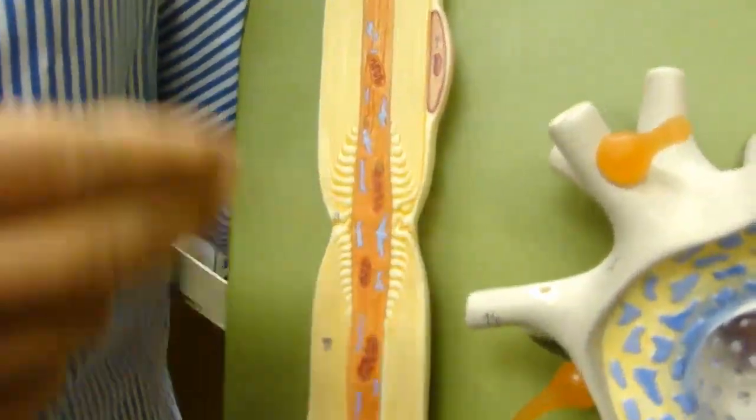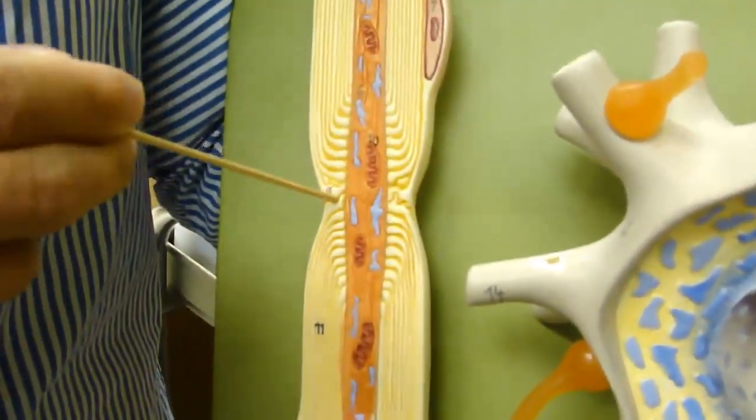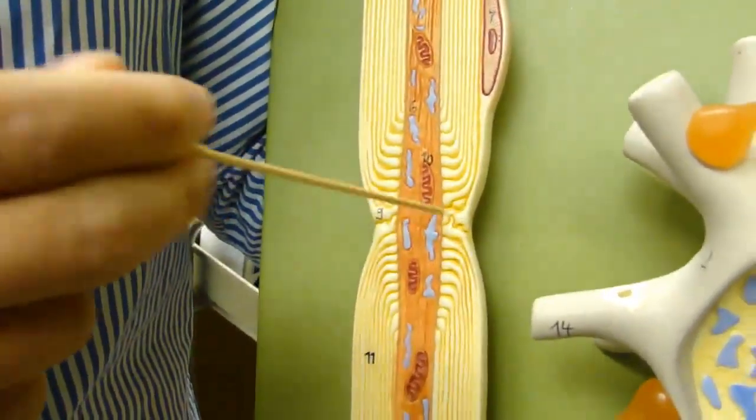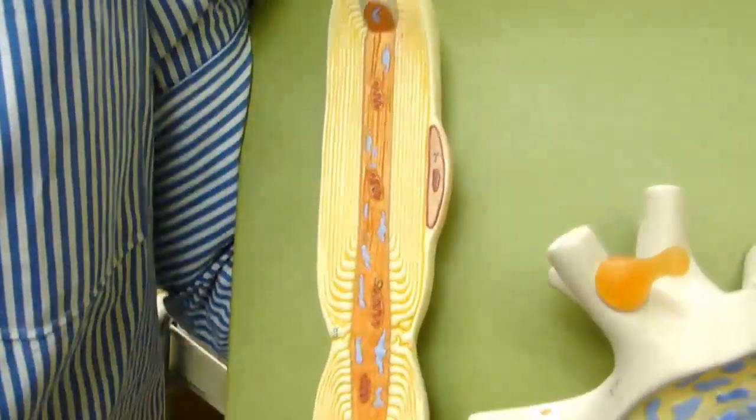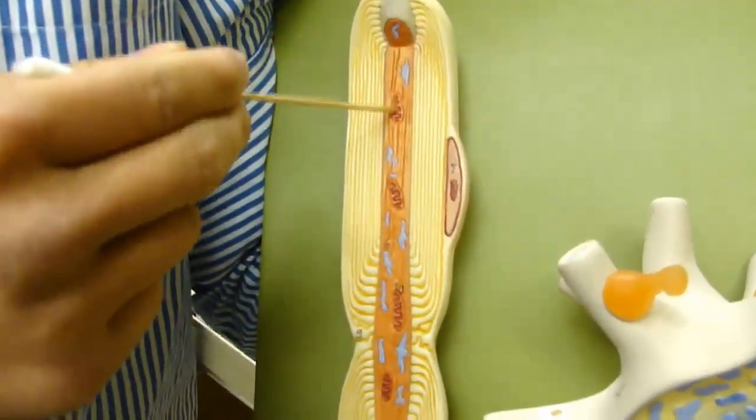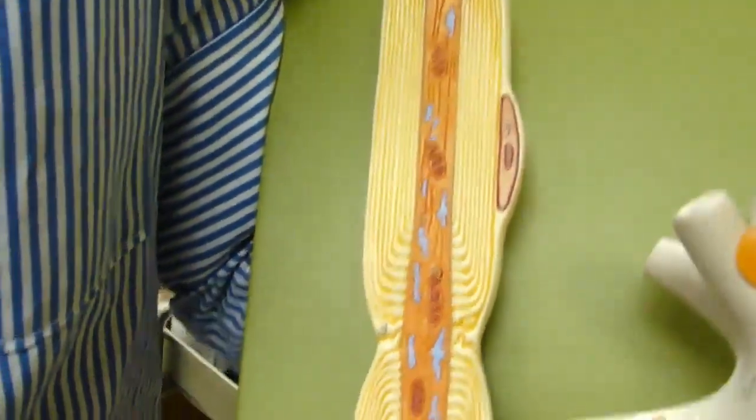So in between the two Schwann cells, we got the node in between. And this is the axon, you can see that that's the Nissl body, mitochondria and the entire axon.